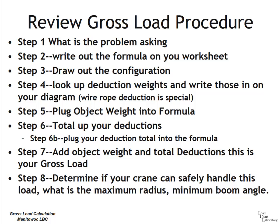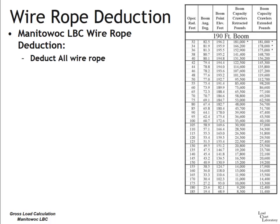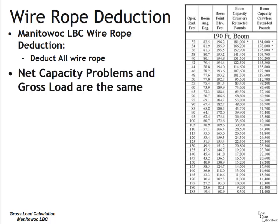Now let's talk specifically about calculating the wire rope deduction for the Manitowoc lattice boom crawler. With the Manitowoc crane for the CCO exam, we deduct all wire rope — that's what the load chart notes direct us to do. If we have six parts of wire rope off the main boom, we deduct all six parts from tip to ground. If a jib is erected with ten feet hanging off it, we deduct the weight of that rope too. This process is the same for both net capacity and gross load problems.